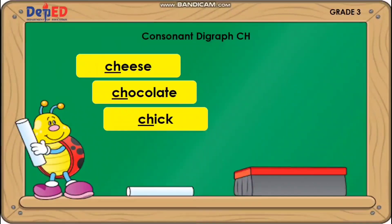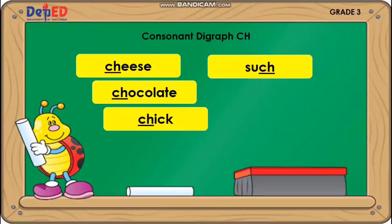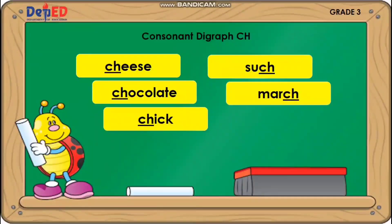The following are words that end with consonant digraph CH: Such. March. Beach.